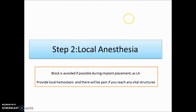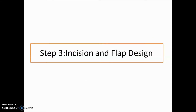For local anesthesia in implant placement, a nerve block is avoided — infiltration is given instead. Infiltration provides local hemostasis and serves as a safety signal: if you reach a vital structure, the patient will feel pain, alerting you. For example, when placing an implant in the posterior mandible with only infiltration, pain on approaching a vital structure gives you that warning.